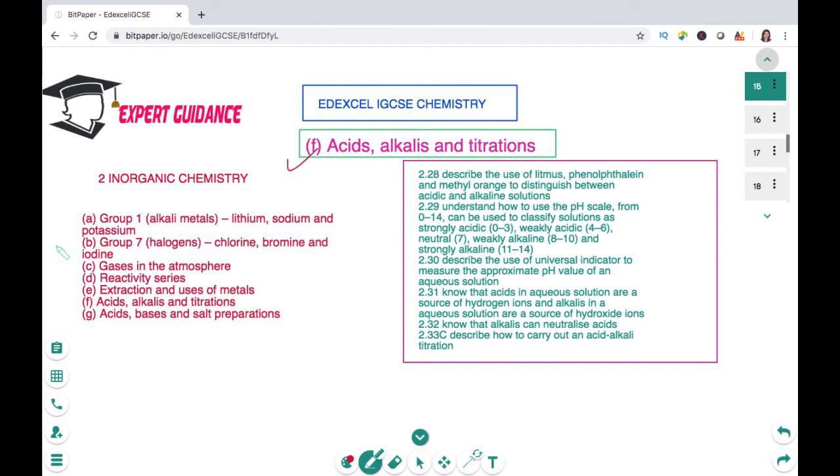In this video we will be covering specifications 2.28 through 2.32. We will look at how to distinguish between acids and alkaline solutions, how to find differences in terms of pH scale, the indicators, the use of universal indicators, and various ways to define acids and alkalines. We will also look at neutralization reactions. I recommend watching till the end because we will have important key terms and conceptual questions.